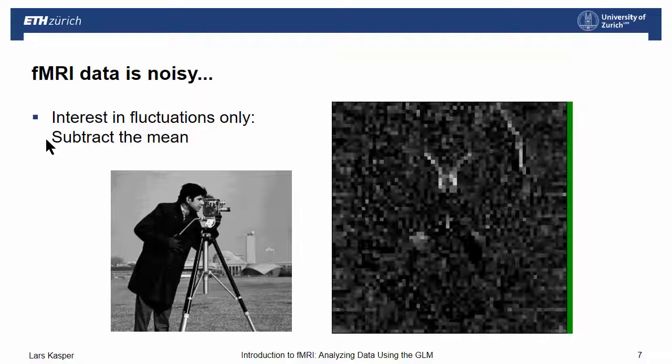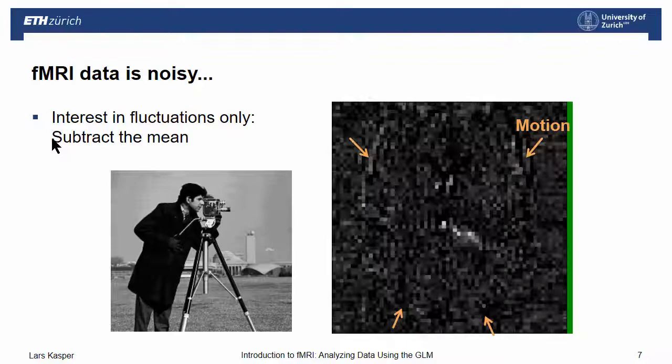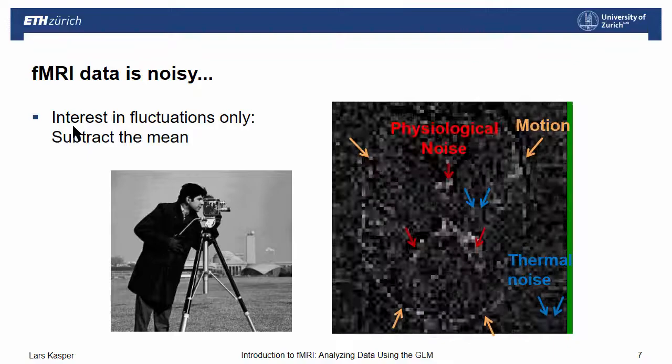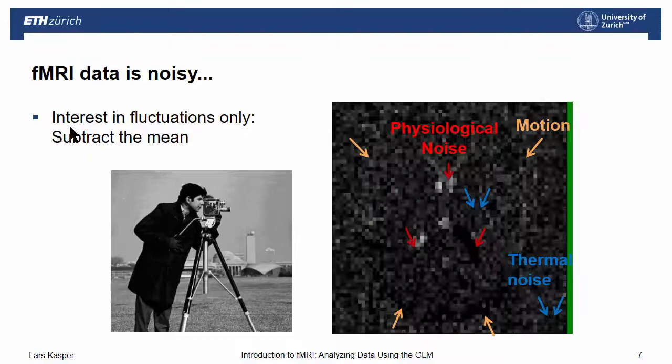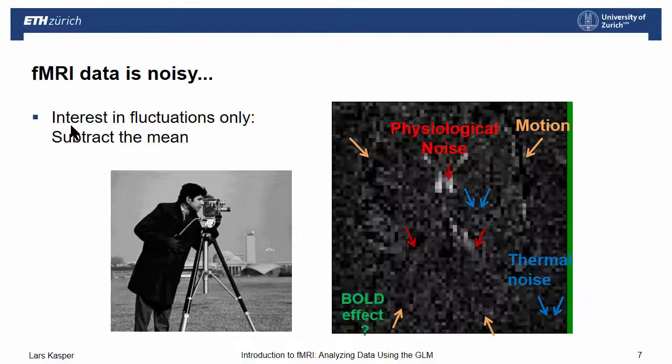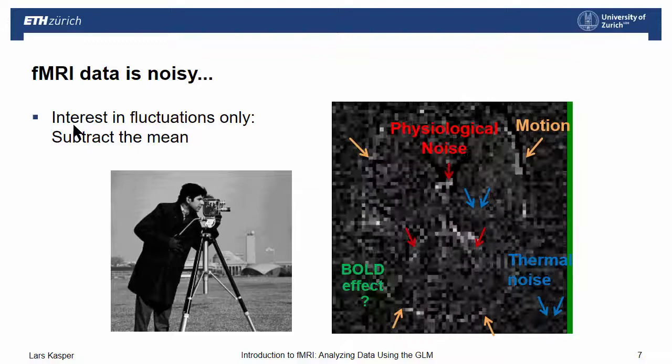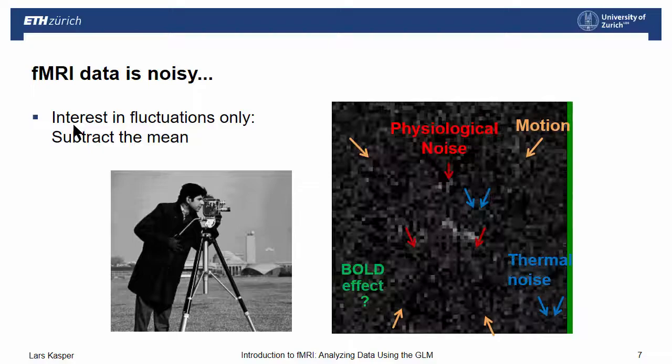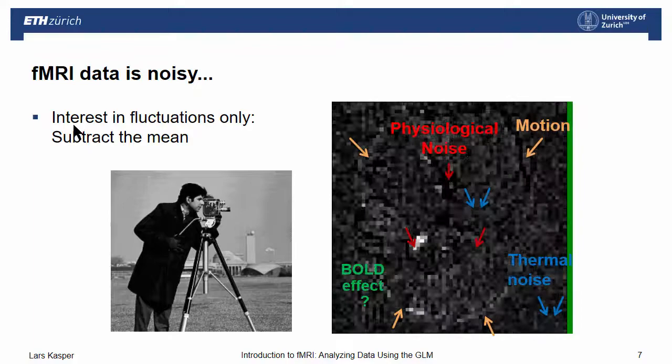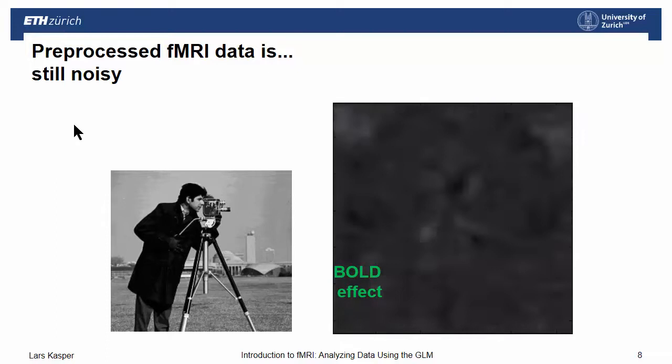Now, what can we see? We see a lot of fluctuation and you might have spotted something like these edges there, they come from motion, thermal noise that is also in the background of the image, physiological noise in the ventricles. And did anybody see the bold activation so far? But there is a bold effect. And now you might say, actually we have heard in the last lecture, this is not really the situation. We don't deal with raw data. We do all this beautiful pre-processing to increase our signal-to-noise ratio.